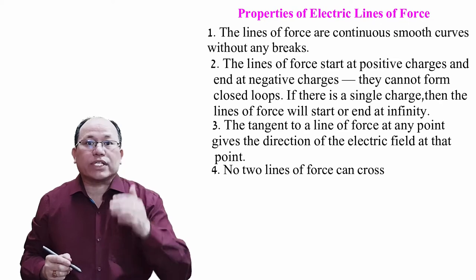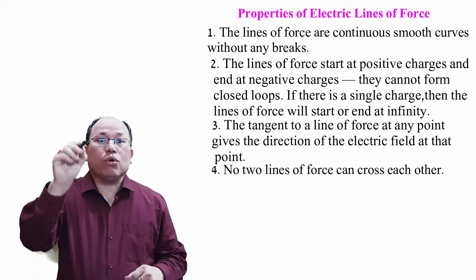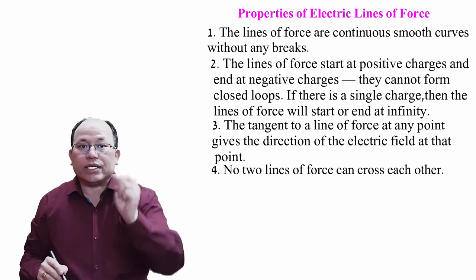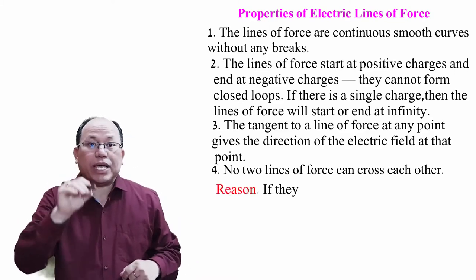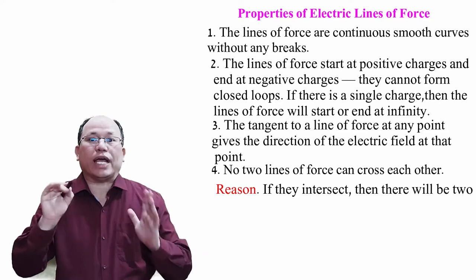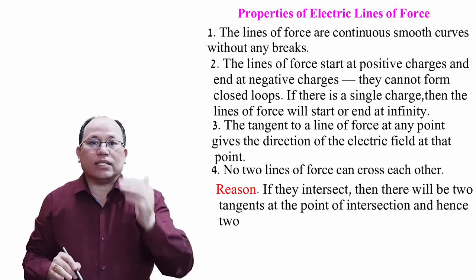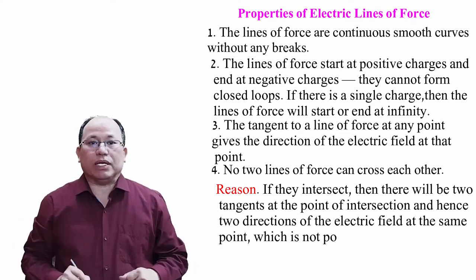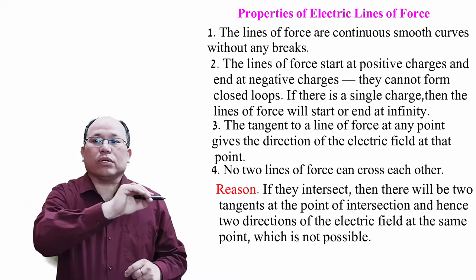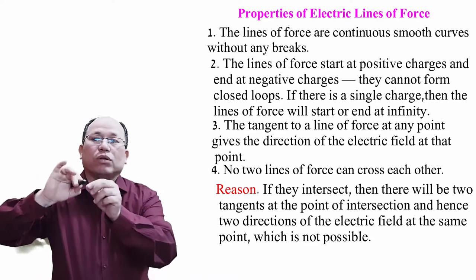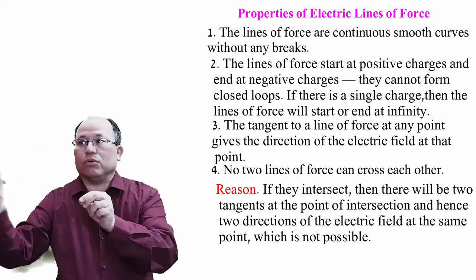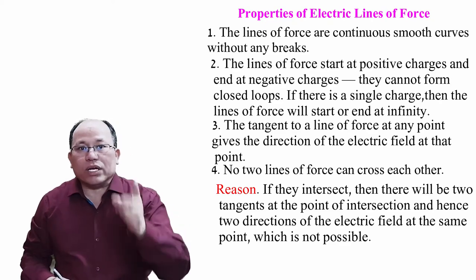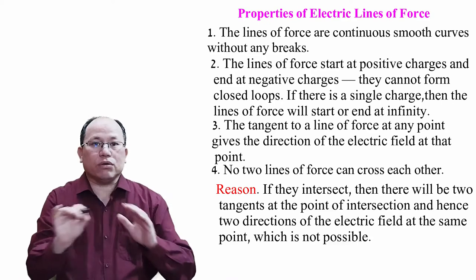Fourth, and very important property: no two lines of force can cross or intersect each other. If they were to intersect, there would be two tangents at the point of intersection, implying two directions of the electric field at the same point, which is not possible. A single point cannot have two electric fields.